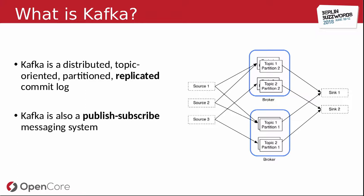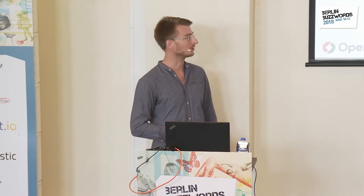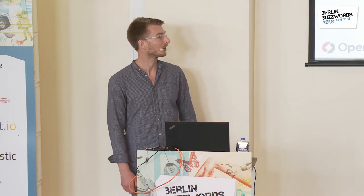I promise to keep this brief — since you're here you probably all know what Kafka does. It is a distributed, topic-oriented, partitioned, replicated commit log. Basically, you stick data in on one end and get it out on the other. The important distinction is that it's a publish-subscribe system, so it doesn't actively send you data — you need to connect and retrieve it. Kafka itself is never the active part; everything else like replication it takes care of for you.